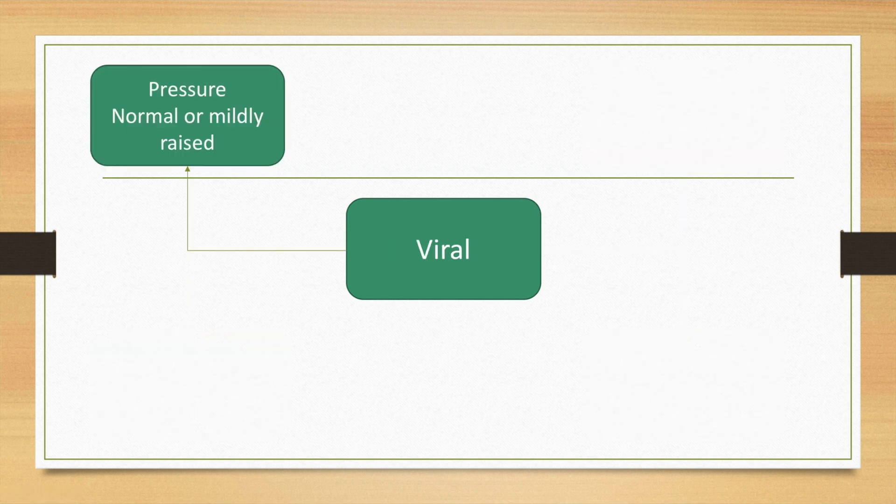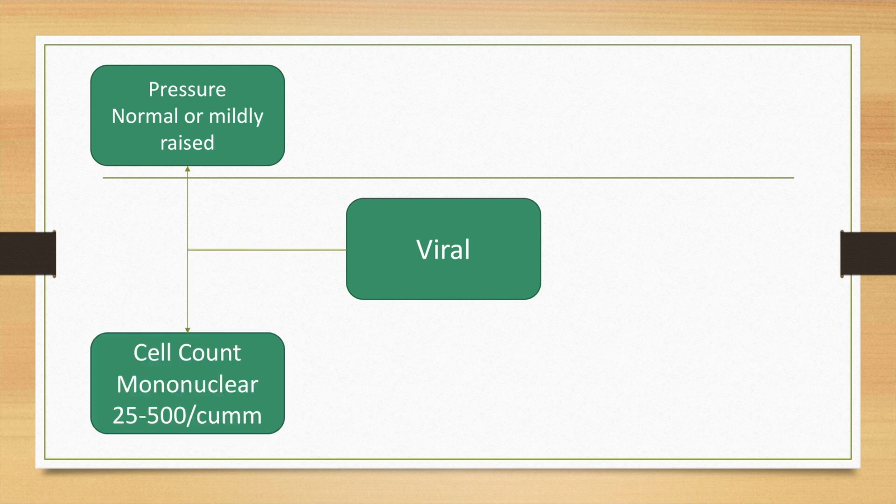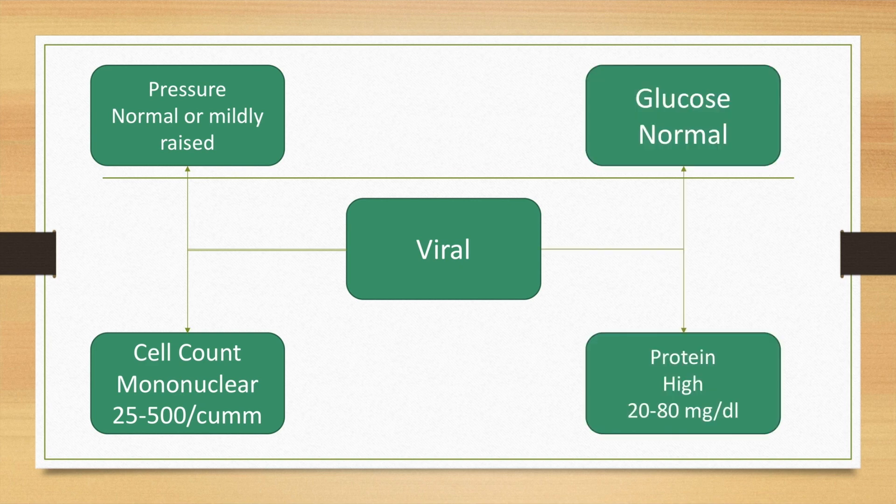In viral meningitis, the pressure is normal or mildly raised. The cell count is predominantly mononuclear or lymphocytic, ranging between 25 to 500. The glucose is normal and the protein may be elevated between 20 to 80 milligrams per deciliter.